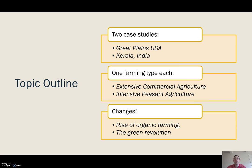Each of these areas focuses on a separate type of farming. In the Great Plains we have extensive commercial agriculture, and in Kerala we have intensive peasant agriculture.